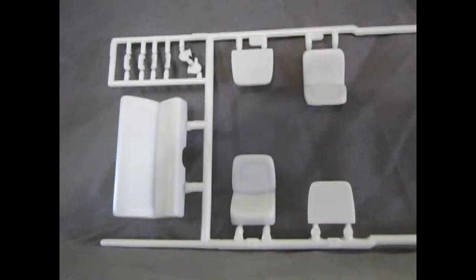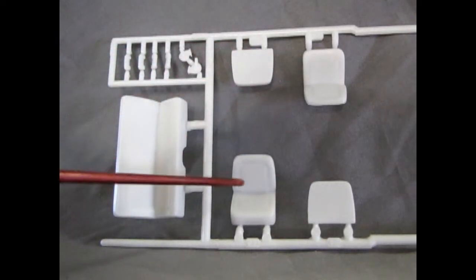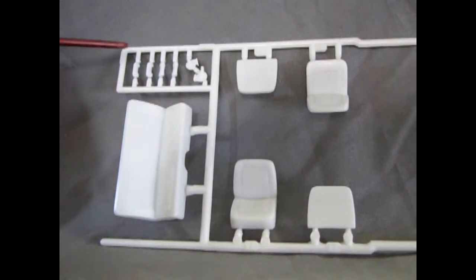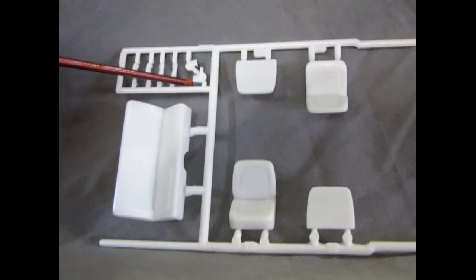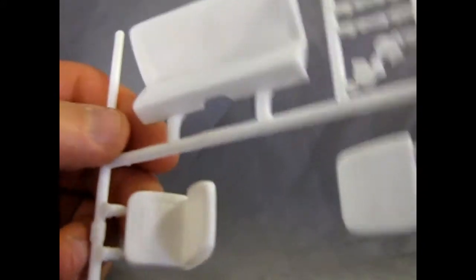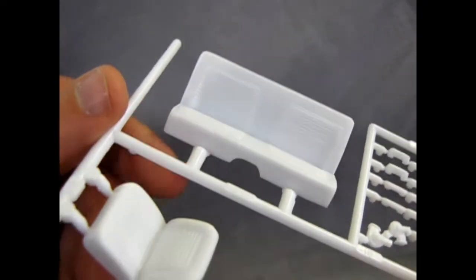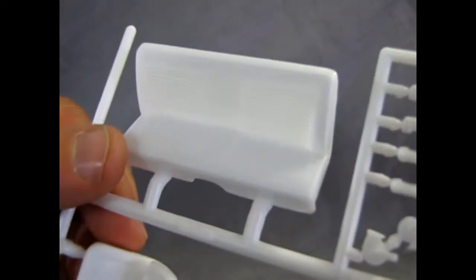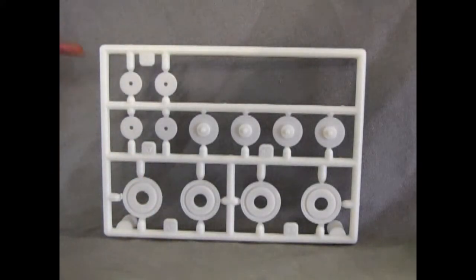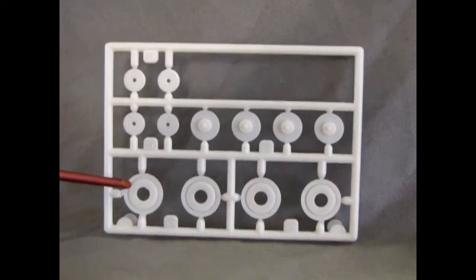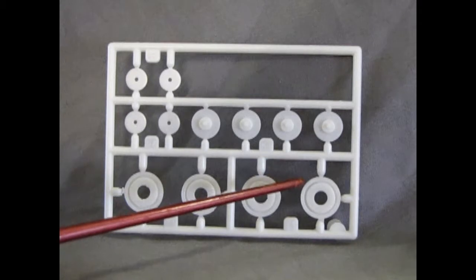So the next parts tree here includes the front bucket seats. Some nice detail on those. And our rear bench seat with a similar tuck and roll on there. And then we have our armrests up here and the two horns for the radiator wall. And then this has got a big blank space, which is reminiscent of the Johan Chrysler Turbine kit from 63. Now our next parts tree here contains the wheel retainer clips and the wheel backs, as well as the rim backs here for the tires to plug in.